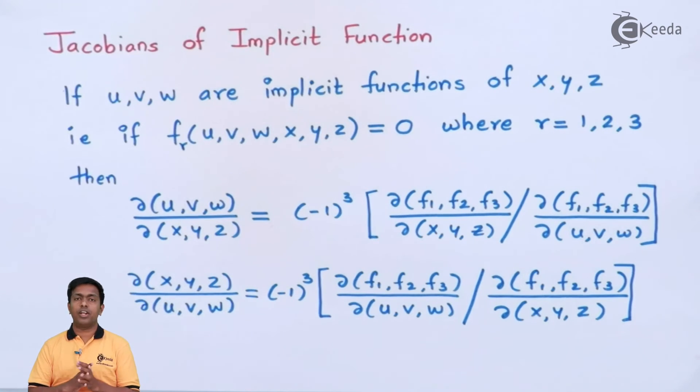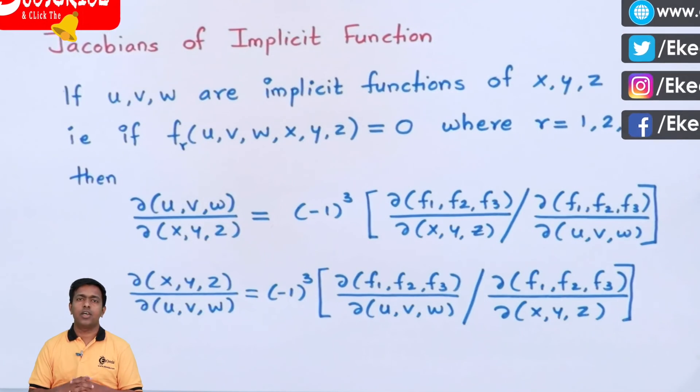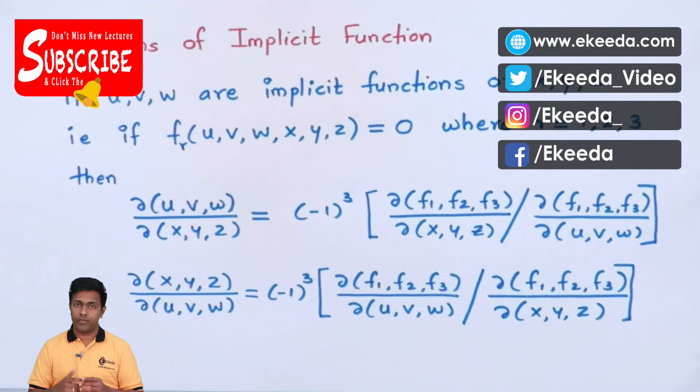So this is the formula to find out the Jacobian of implicit function. Now I will be using this formula in the coming numericals to get the solution. I am sure that you understood this video very well. What you have to do is just subscribe to eKeeda and share this video to many students, to your friends, because if you share this video to your friend, they will also understand the concept of Jacobian of implicit function very well. Thank you very much.